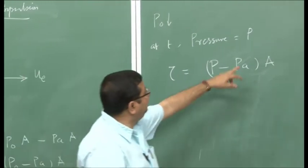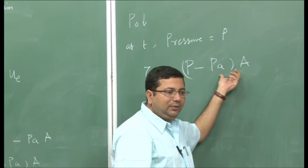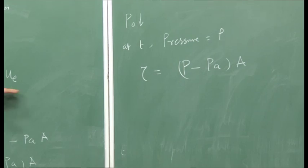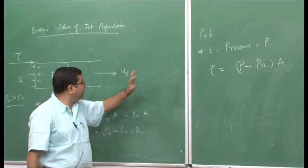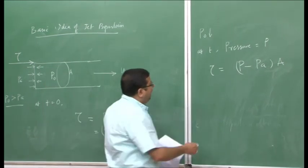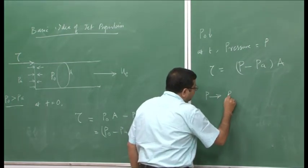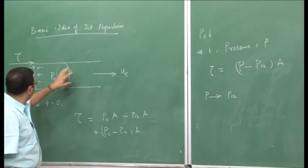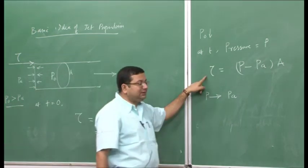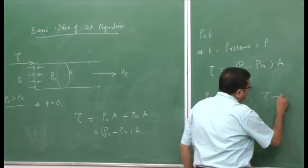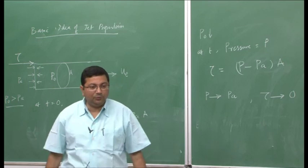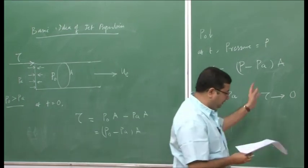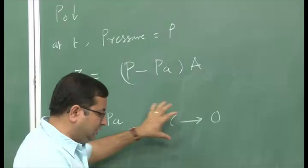After some time P_naught starts decreasing. At a certain instant of time T, the pressure is equal to P, and at that instant the thrust force is (P minus P_a) times A. The pressure has reduced to P while atmospheric pressure P_a remains the same, so the thrust has reduced accordingly. As gas continues to escape, pressure decreases until it equals P_a, at which point the thrust tends to zero and production of thrust stops.